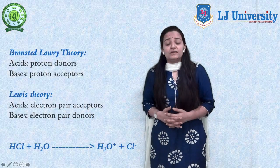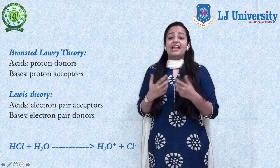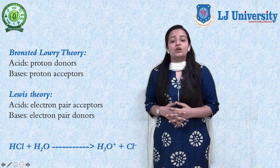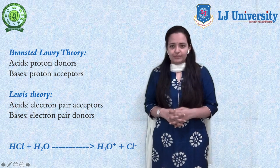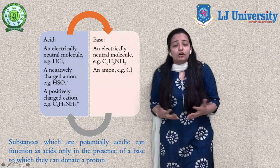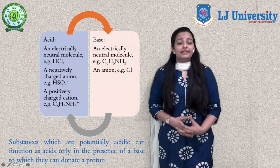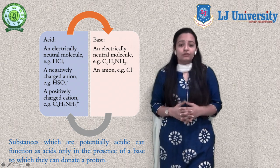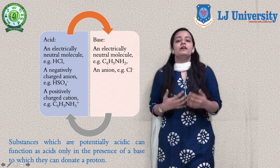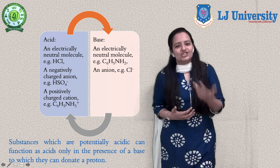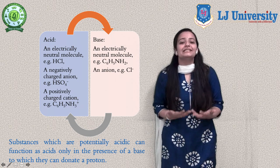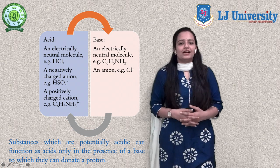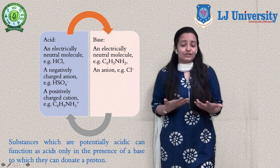According to the Lowry-Bronsted and Lewis theory, when an acid reacts with water it converts into the conjugate acid and conjugate base. An acid may be either an electrically neutral molecule, e.g. HCl, or a positively charged cation, e.g. C₆H₅NH₃⁺, or a negatively charged anion, e.g. HSO₄⁻.